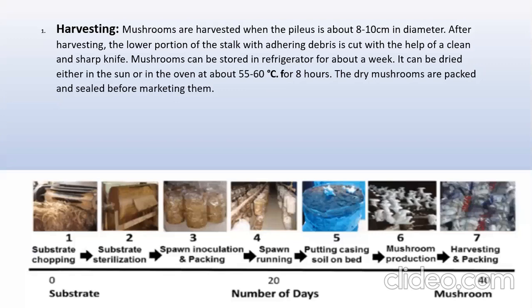Now harvesting. Mushrooms are harvested when the pileus — the cap part of the mushroom — is about 8 to 10 cm in diameter. After harvesting, the lower portion of the stalk with adhering debris is cut with the help of a clean and sharp knife. Mushrooms can be stored in a refrigerator for about a week. They can be dried either in the sun or in an oven at about 50 to 60°C for 8 hours. The dry mushrooms are packed and sealed before marketing.